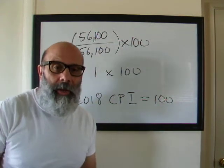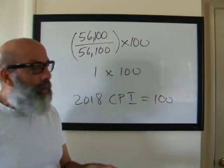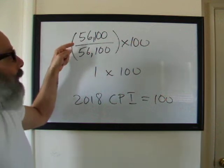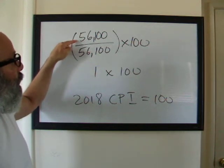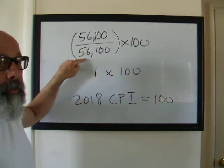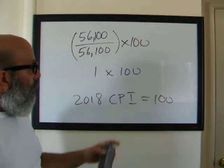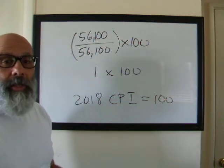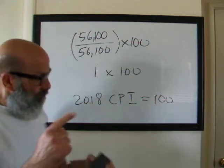So that means that the 2018 CPI equals 100. The base year is always going to be 100. So your base year has always got to be 100 because for the base year, the numerator, the given year and the denominator, the base year are the same. So in our base year for 2018, we have a CPI of 100.